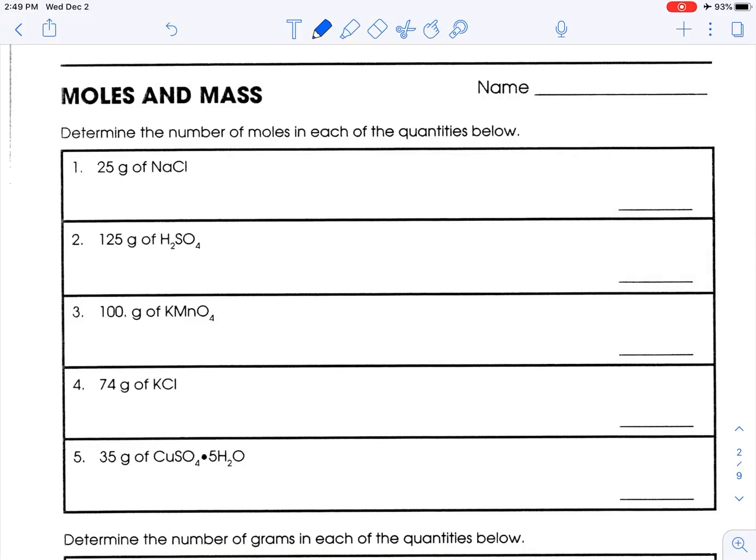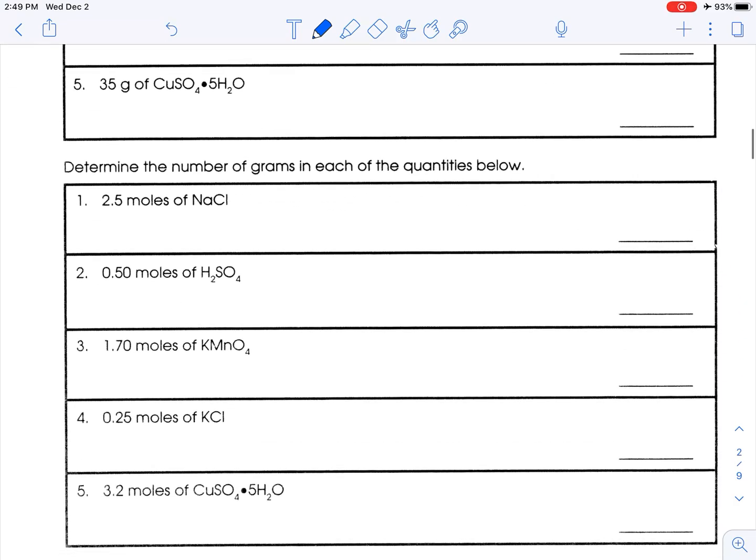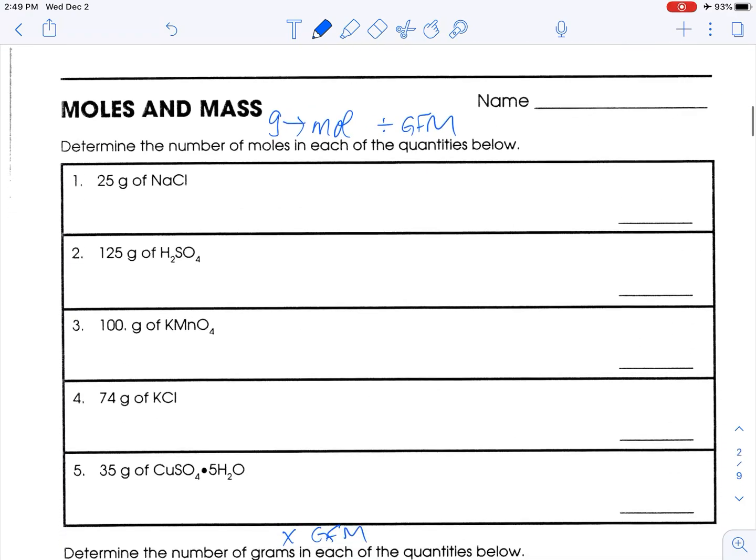Okay, so we are going to be converting between moles and mass. You're going to need a reference table and a calculator. Remember, the first part they're all going from grams to moles. So from grams to moles we're going to divide by the GFM. And when we're going from moles to grams we're going to multiply by GFM. You can use your mole map to help you.